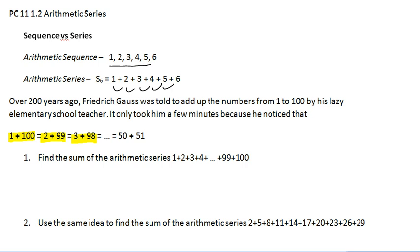So basically we end up with all of these are 101's. And if we think about it for a second, we're going to have 50 of them, because we have 1, 2, 3, all the way to 50. So 101 times 50 gives us 5050.